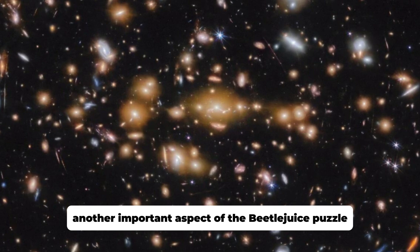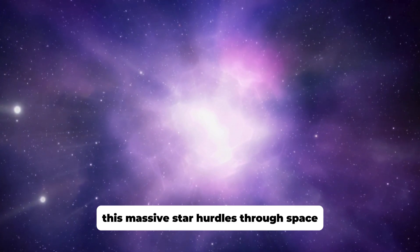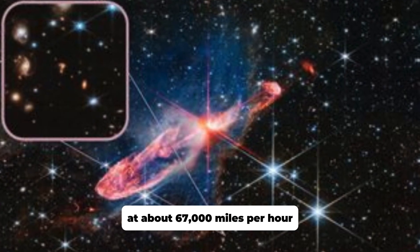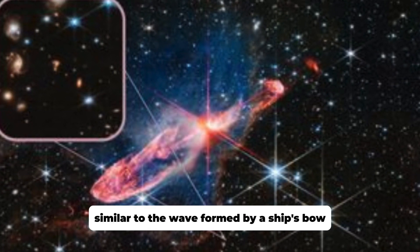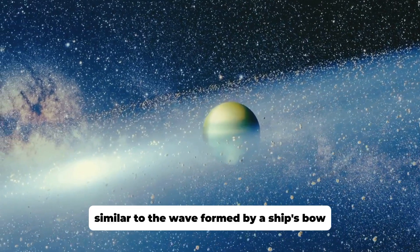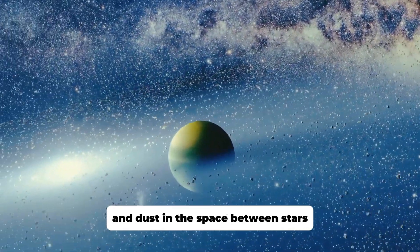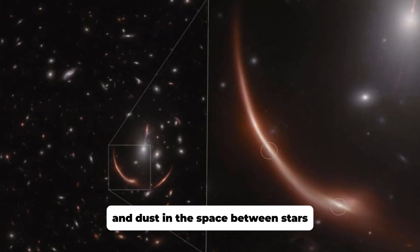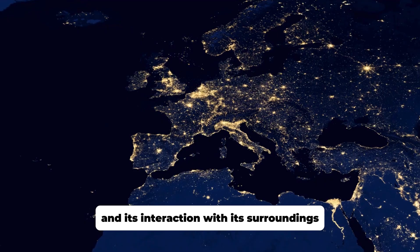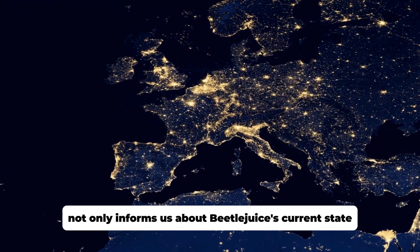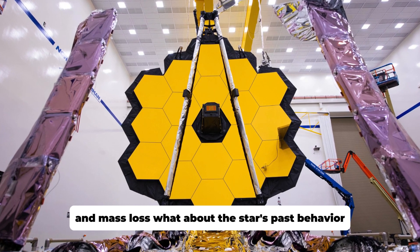Another important aspect of the Betelgeuse puzzle is the concept of bow shock. This massive star hurtles through space at about 67,000 miles per hour relative to the interstellar medium around it, creating a bow shock similar to the wave formed by a ship's bow. This effect occurs when the star's outer layers interact with the gas and dust in the space between stars. The bow shock not only informs us about Betelgeuse's current state, but also helps us understand stellar evolution and mass loss.